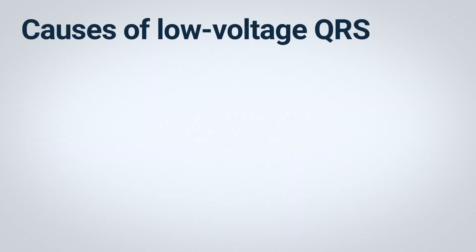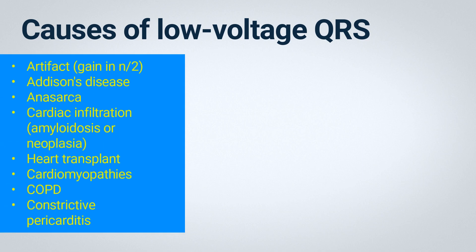It's important to note that the presence of low-voltage QRS on an electrocardiogram also suggests pericardial effusion, not just electrical alternation. However, there are other causes that can lead to low-voltage QRS. Among them is artifact — meaning that during the electrocardiogram, a smaller amplitude was chosen, such as half N, where N is the normal amplitude typically used for electrocardiographic traces. If someone accidentally reduces the gain on the device, we may see a non-pathological low-voltage QRS complex resulting from incorrect configuration of the electrocardiogram device.